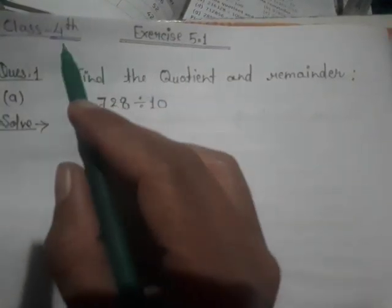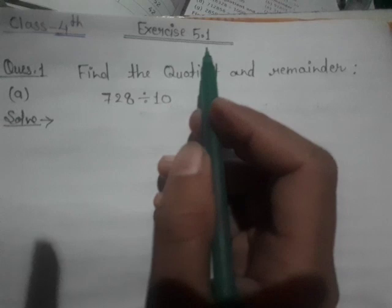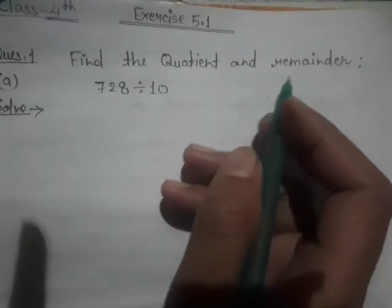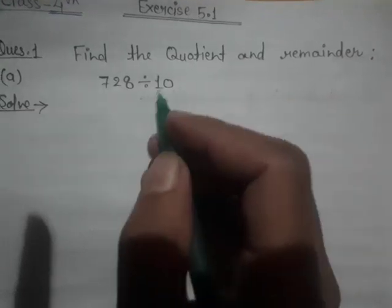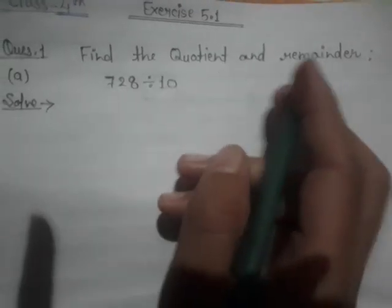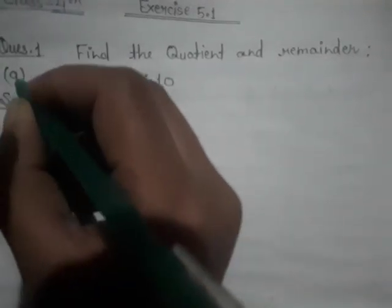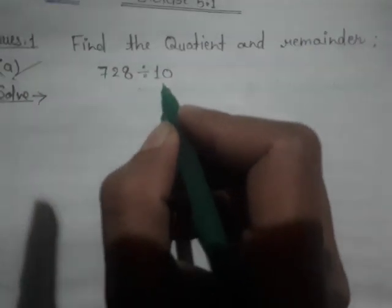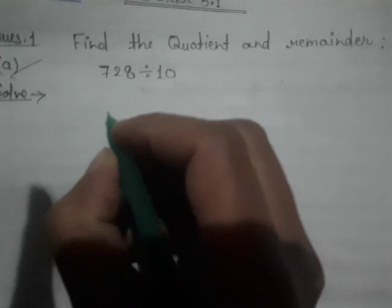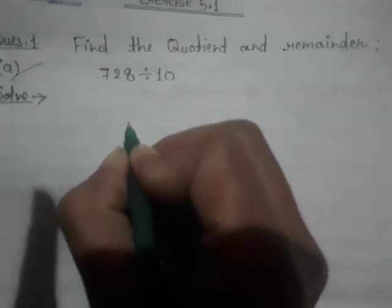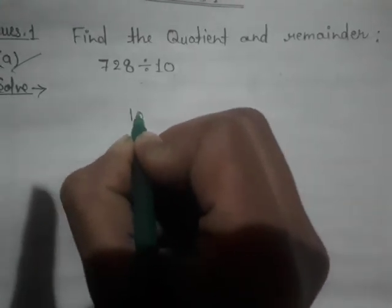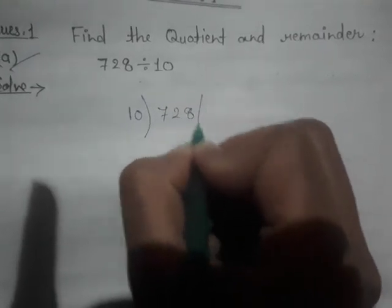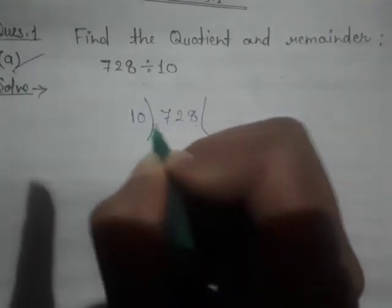Hello students, Class 4 Exercise 5.1, question first: Find the quotient and remainder. Question number A: 728 is divided by 10. So 10 into 728, 728 is divided by 10.